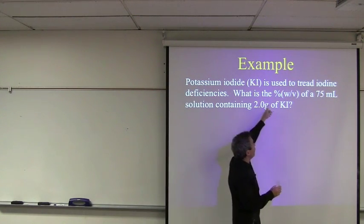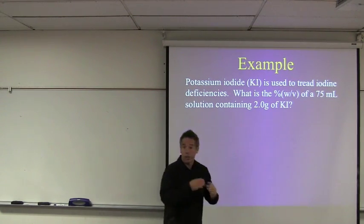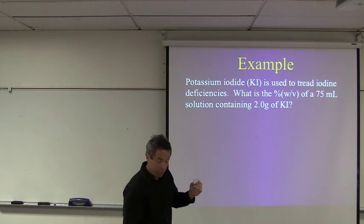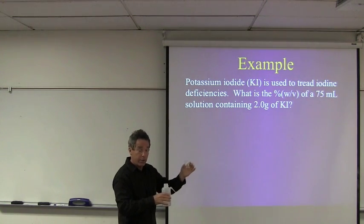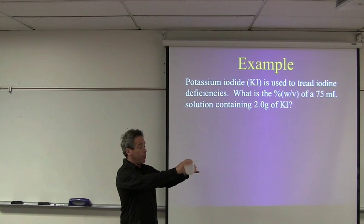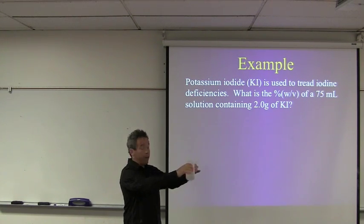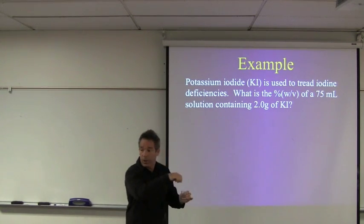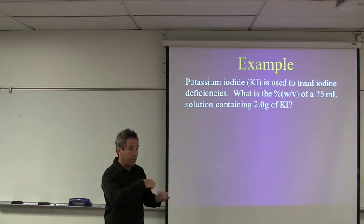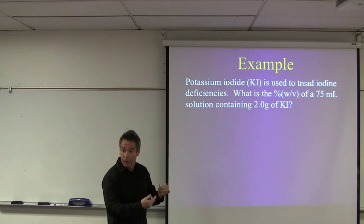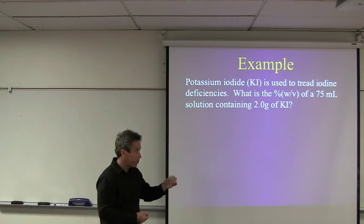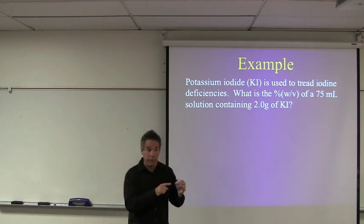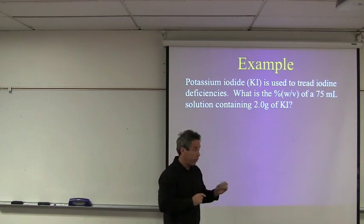I'd press the tare button on the balance, and now the container is part of the balance, and then I would use my spatula or scoopula, and I would carefully weigh out, I'm watching the balance, and I carefully add the potassium iodide until I get the balance reading 2.0 grams. So now I have 2.0 grams of potassium iodide in there, and now I need to fill it up to the 75 milliliter mark. So I'd use some kind of graduated container.